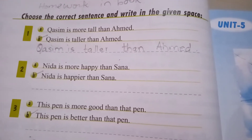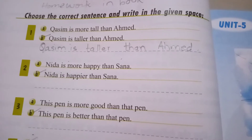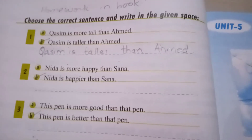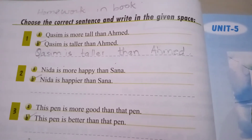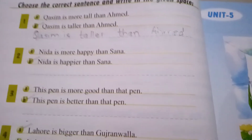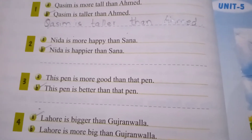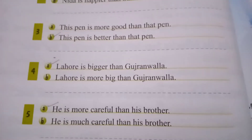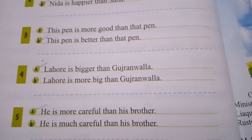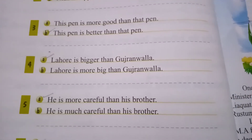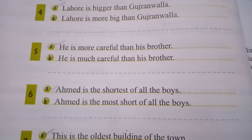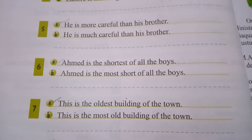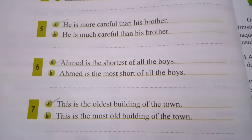For example: 'Kasim is more tall than Ahmed' versus 'Kasim is taller than Ahmed' — the correct option is Kasim is taller than Ahmed, so you will write the correct option in the blank. The second correct option is: Nida is happier than Sana. Third: this pen is better than that pen. Fourth: Lahore is bigger than Gujaranwala. Number five: he is more careful than his brother.